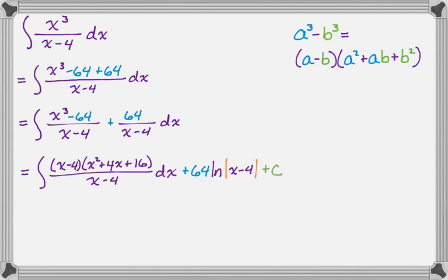So in the integral that we still have, we have x minus four over x minus four, so we can cancel those. And then I'm just integrating a polynomial, so I'm reversing the power rule. So I'm going to go ahead and do that. So it's one-third x cubed, and then plus 2x squared, plus 16x, and then plus what we have left. So 64, natural log, absolute value, x minus four, plus c.